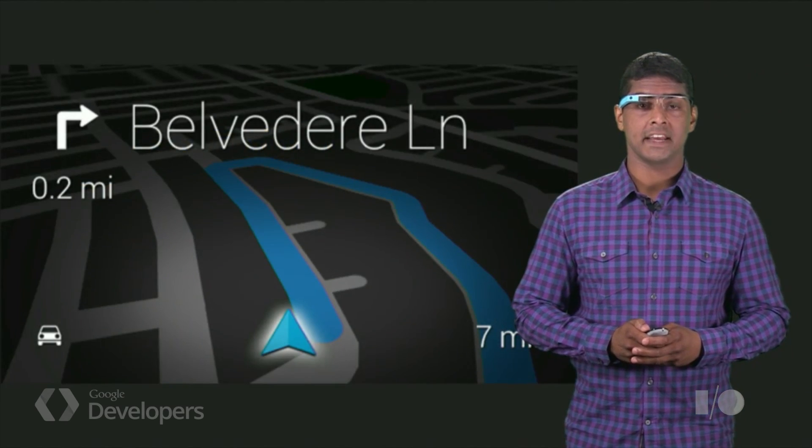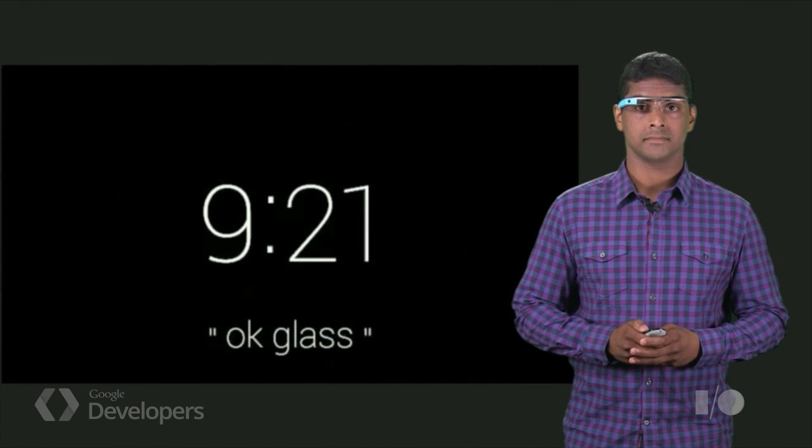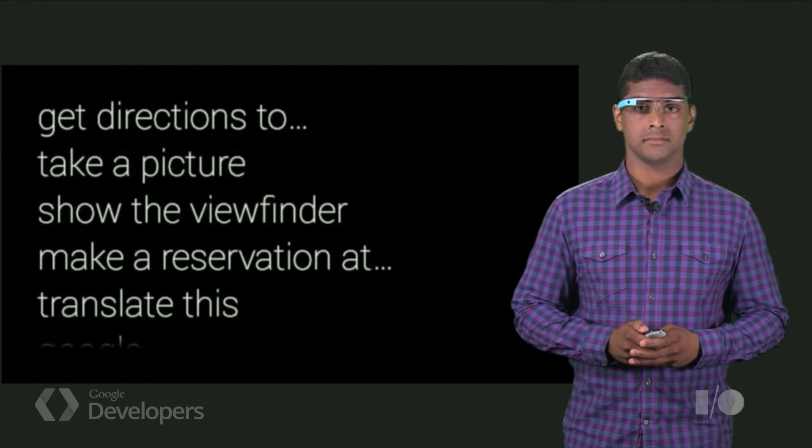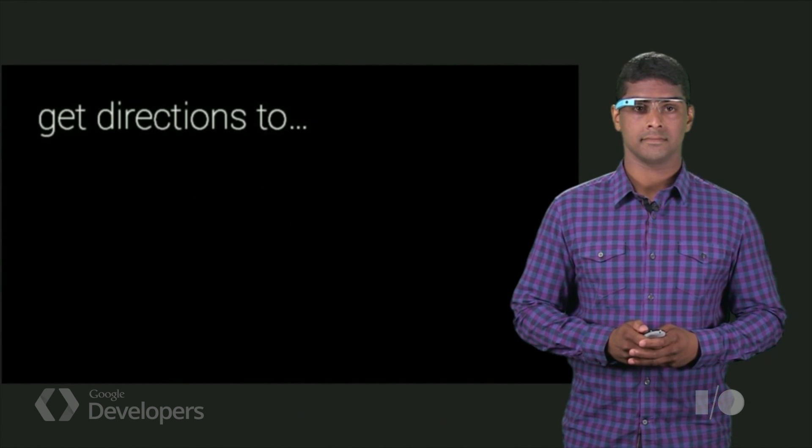First, let's demonstrate how to get directions on Glass using Google Maps. OK Glass, get directions to San Francisco.